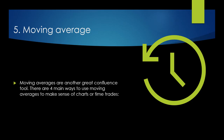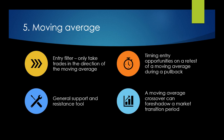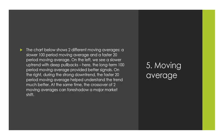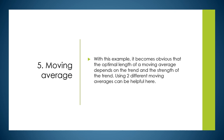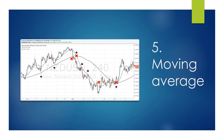Moving averages are another great confluence tool. There are four main ways of using moving averages: as an entry filter — only take trades in the direction of the moving average; as a general support and resistance tool; to time entry opportunities on a retest of the moving average; and a moving average cross can foreshadow a market transition period. The optimal length of a moving average depends on the trend and its strength. Using two different moving averages — a faster and a slower — gives us crossovers, and divergence between them can show a trend, while convergence can show a fading trend.